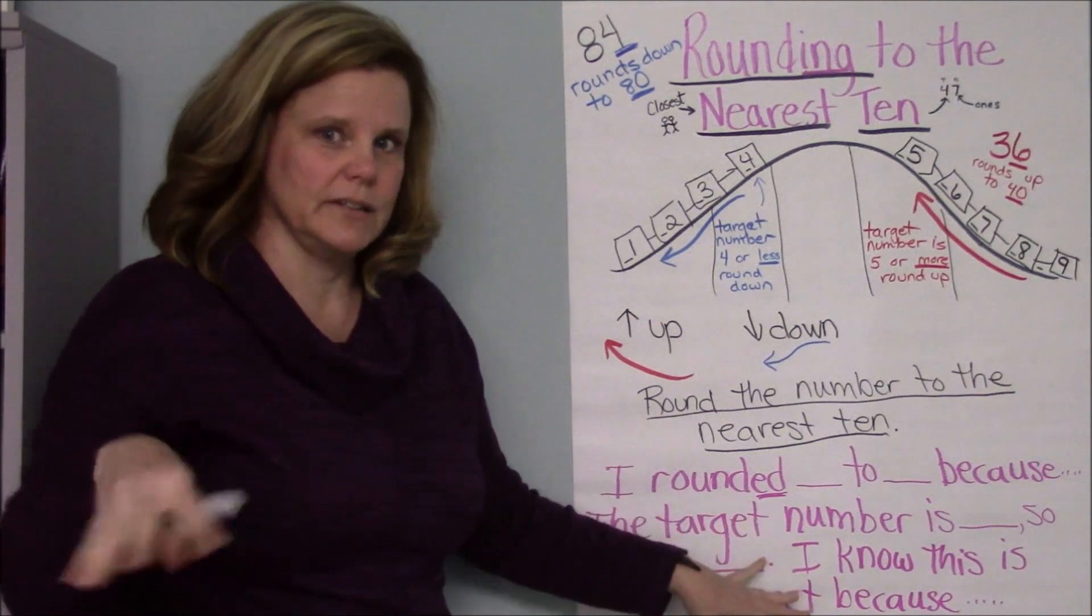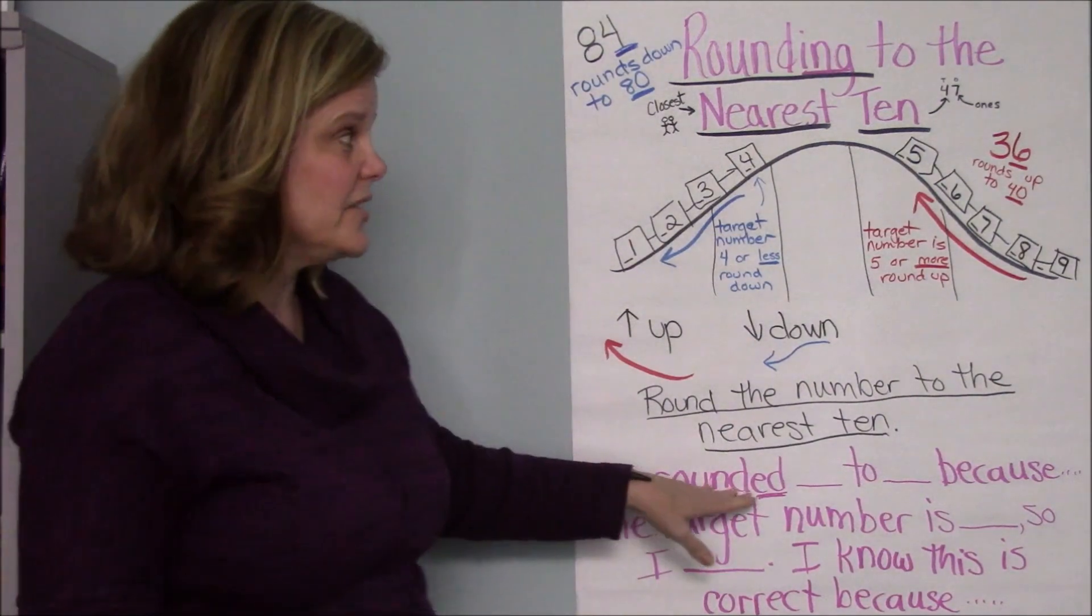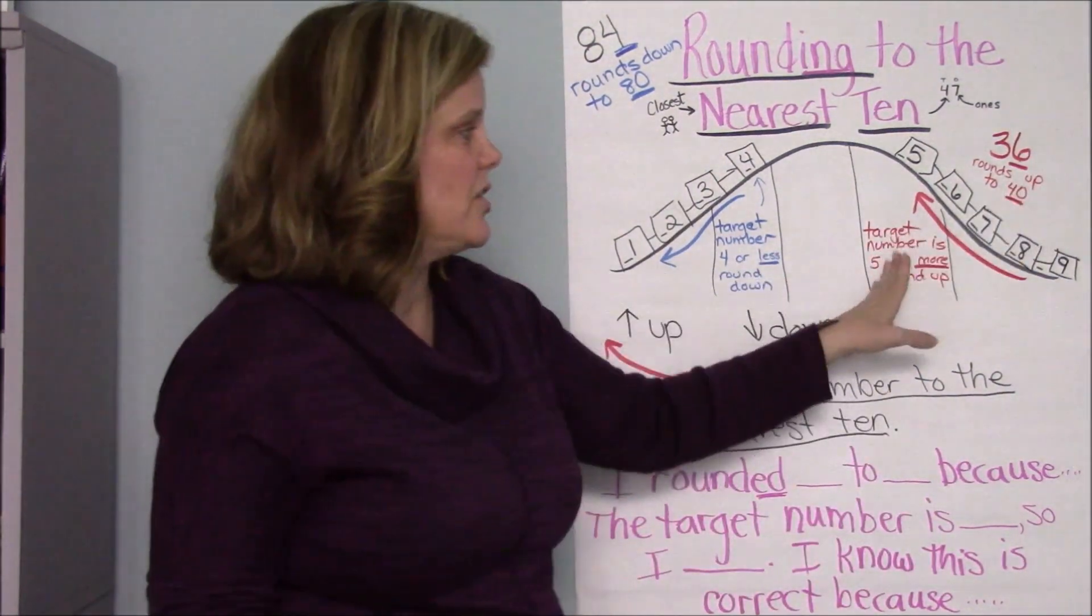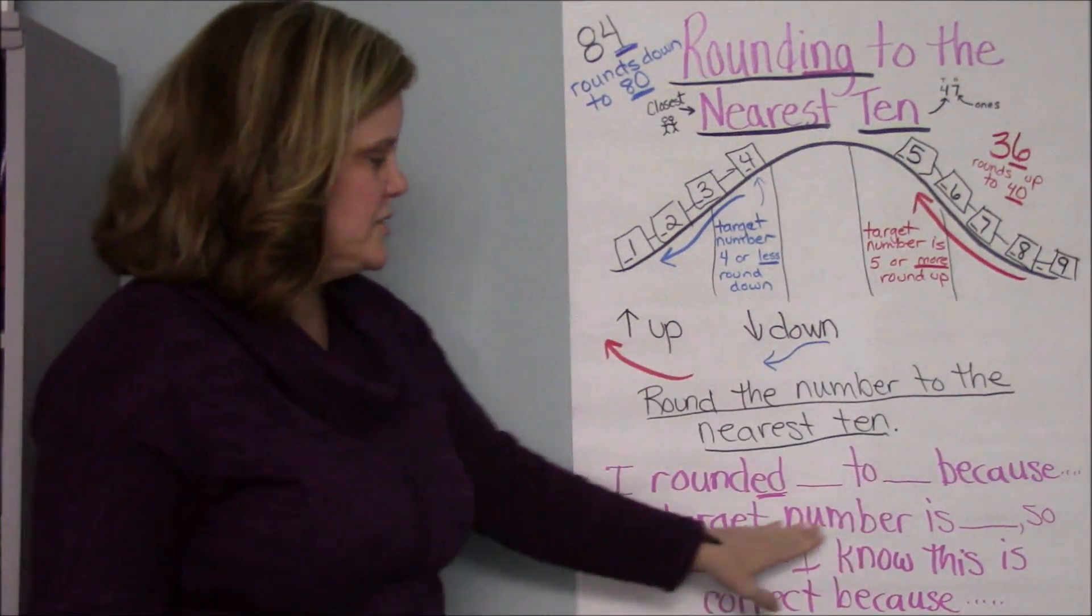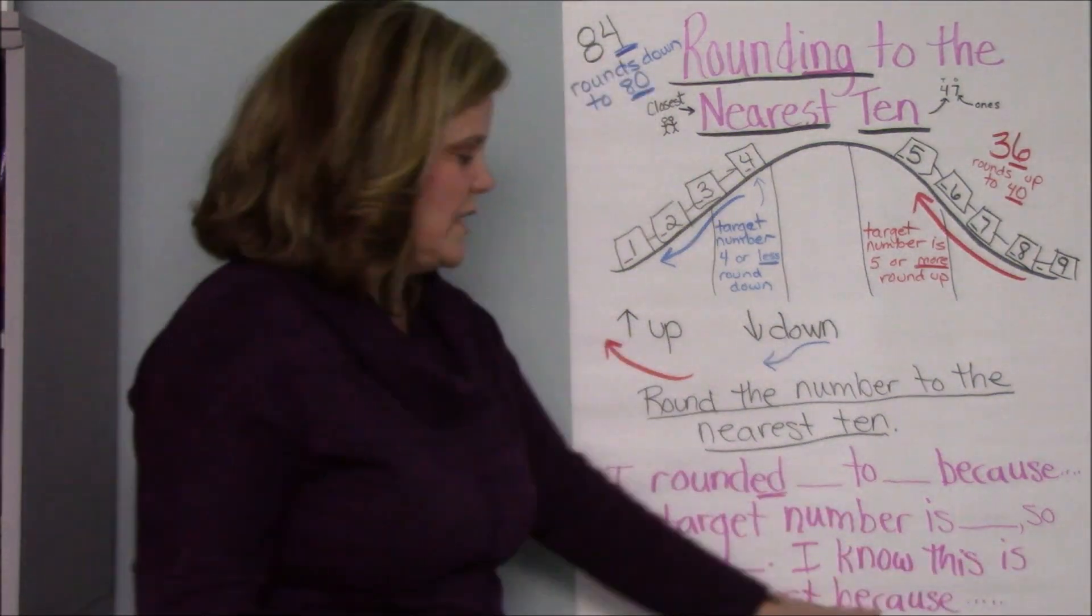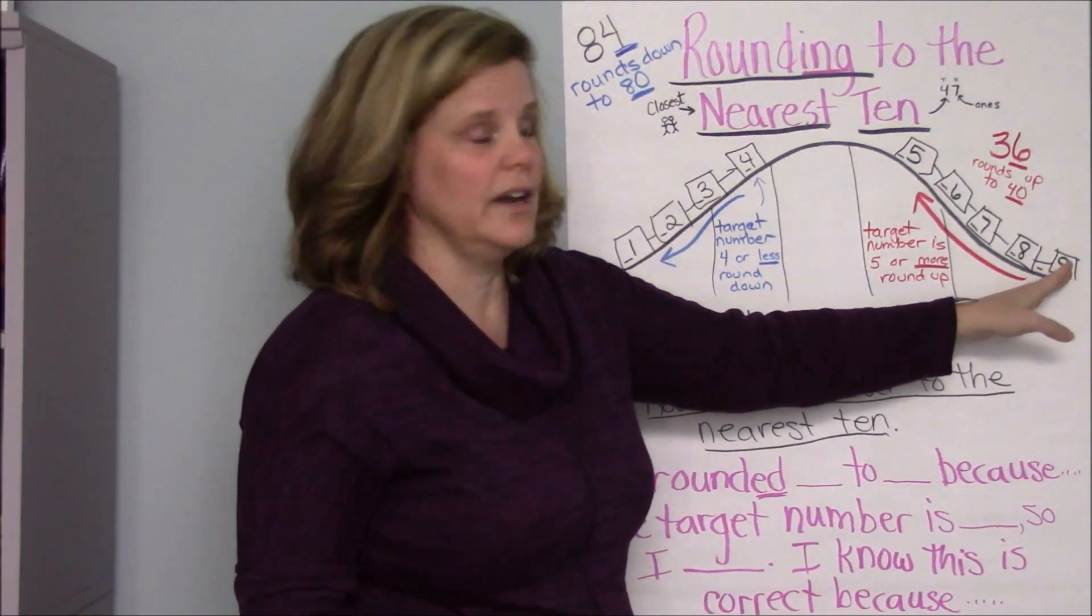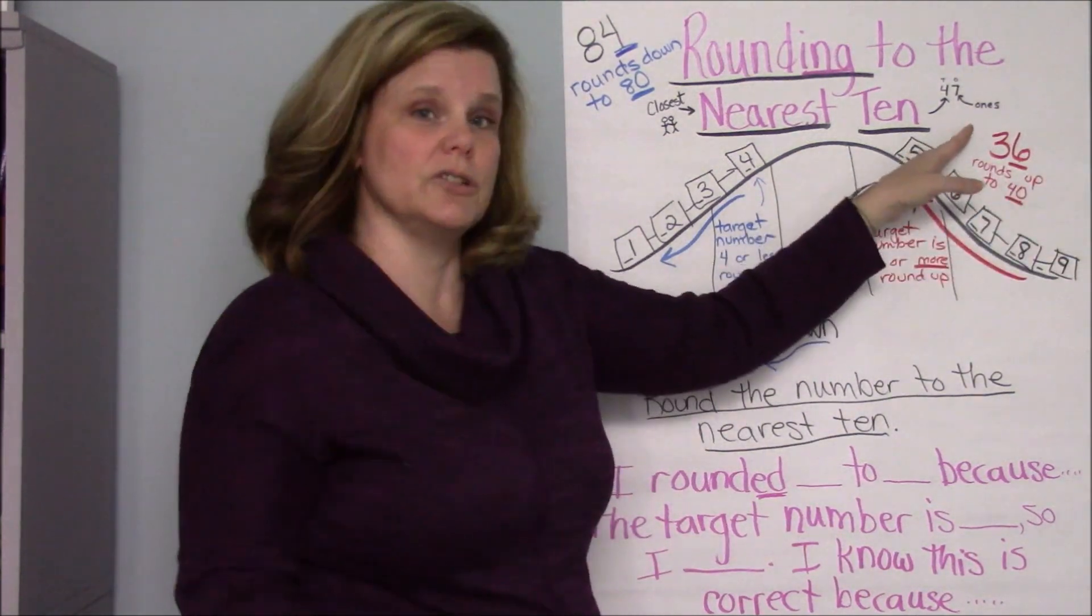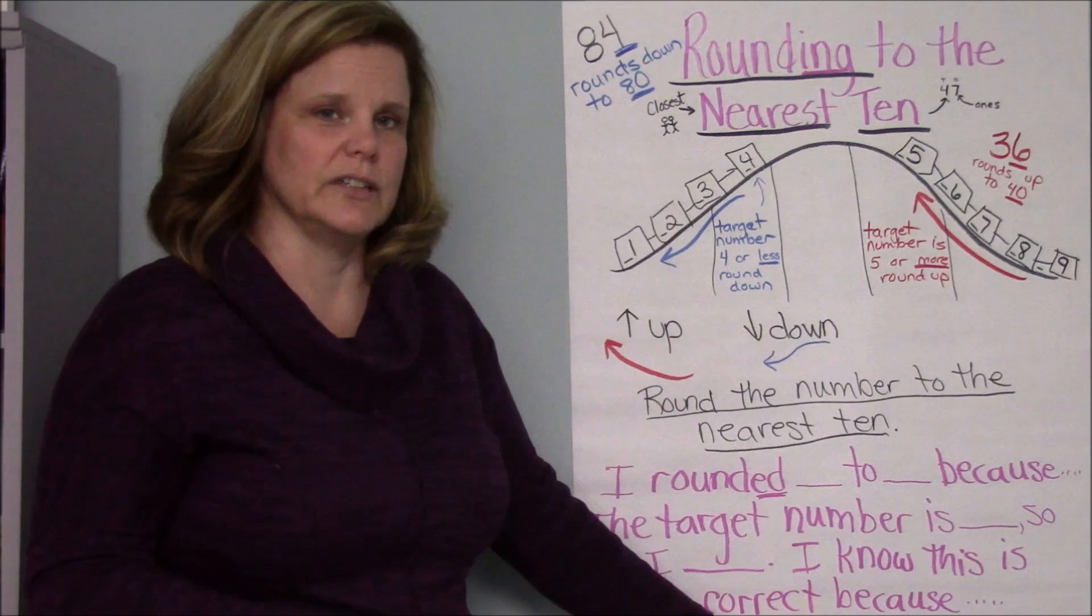So as I'm walking around and listening to you work through this with your partner and you're sharing information back and forth, it should sound like this. I rounded 36 to 40 because six, my target number, is higher than five, greater than five, more than five. The target number is six, so I rounded up. I know this is correct because on the chart, the roller coaster is going up with five, six, seven, eight, or nine. And since six is the target number, I know to round up. And if I round up, I round up to the next 10, which is 40. So these will help you get started.